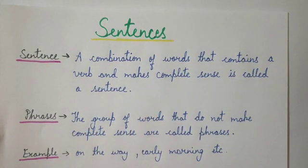For example, Ram is a good boy. A sentence begins with a capital letter. It ends with a full stop, question mark, or exclamation mark.